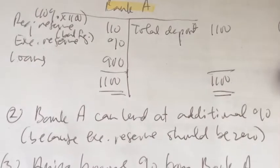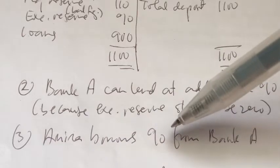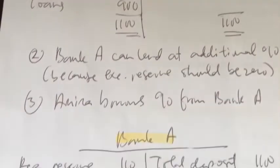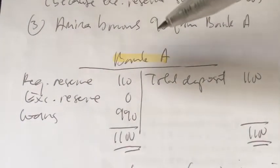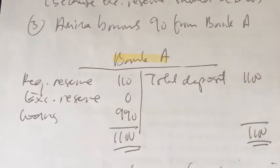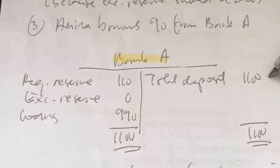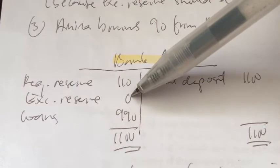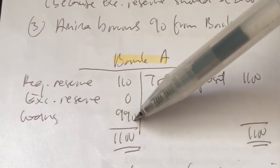Let's say the second individual, Amina, borrows that 90 from Bank A. After lending out the additional 90 ringgit to Amina, Bank A's account looks like this: total deposit is still 1,100, required reserve is still 110, but the excess reserves become zero because 90 ringgit was lent out to Amina — it's now included in the loan account.